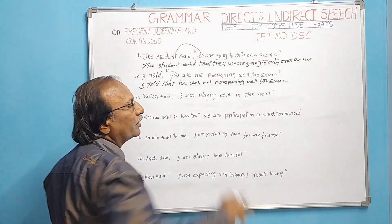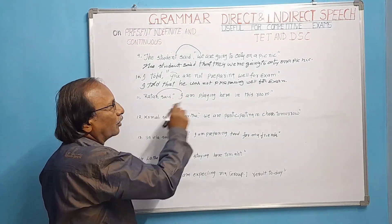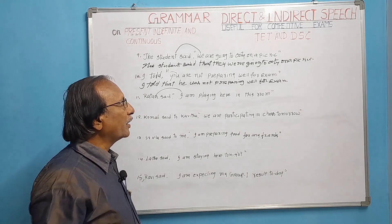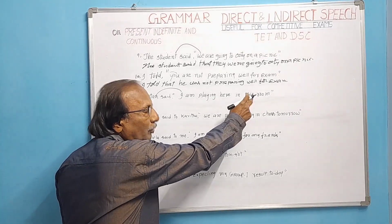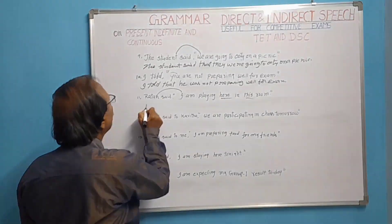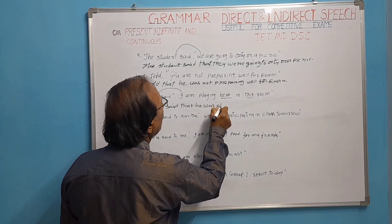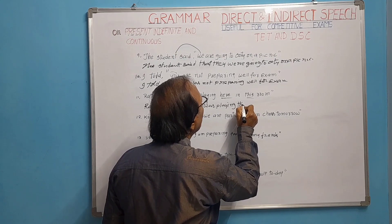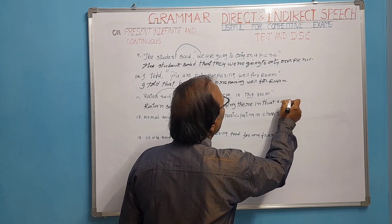Ratan said, 'I am playing here in this room.' 'I' refers to Ratan, so the subject becomes 'he.' Present continuous 'I am playing' changes to past continuous 'he was playing.' 'Here' changes to 'there,' and 'this room' changes to 'that room.' Result: Ratan said that he was playing there in that room.